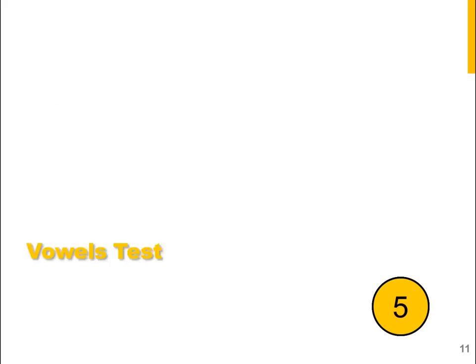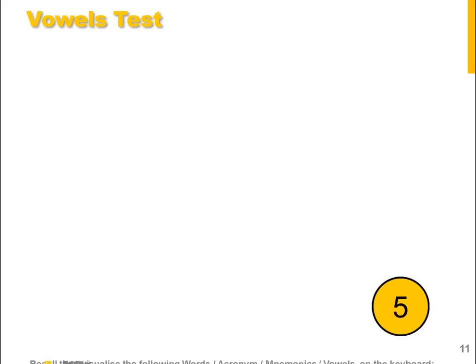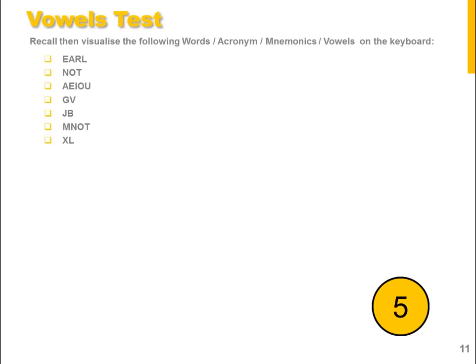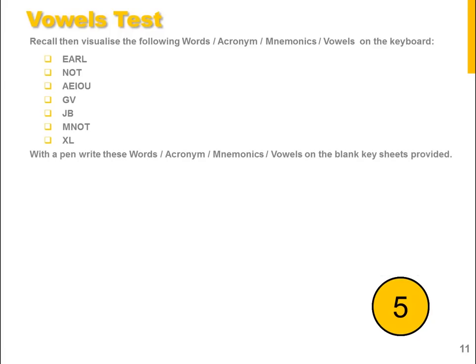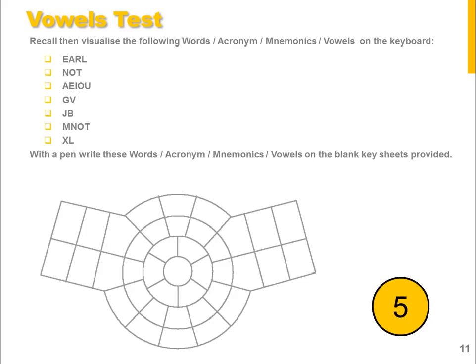Now let's look at the vowel test along with some of the other words, acronyms and mnemonics you have already learned. Again, I would like you to pause the video and, using the blank keyboard diagram you printed off, see if you can remember where each of the above acronyms and words are located.